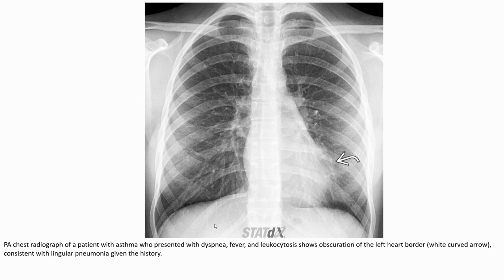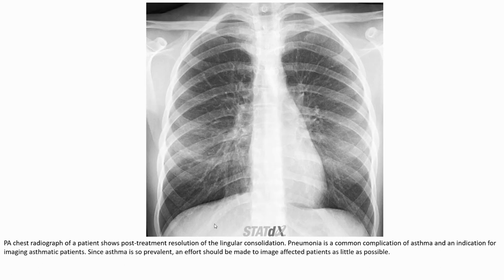This chest radiograph of a patient with asthma who presented with fever and leukocytosis shows obscuration of the left lower lobe — a lung consolidation as a complication of asthma. A post-treatment radiograph shows resolution of the consolidation. This confirms resolving pneumonia, which is a common complication pattern in asthma.